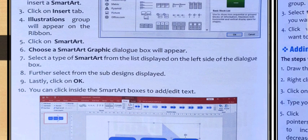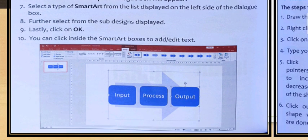Further select from the sub design displayed. Lastly, click on OK. Here you can see the OK option is here and you can click inside the SmartArt box to add or edit text. Once you have selected the SmartArt, click inside it and add the text.